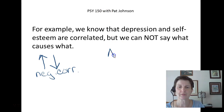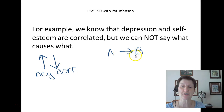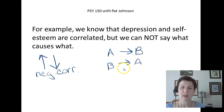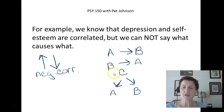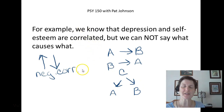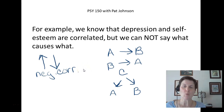In a correlation, the first variable may be causing the second — it may be true that depression causes low self-esteem, or it could be that low self-esteem causes depression. But often in a correlation, some third variable is causing both variables to change. For example, a tragedy in someone's life could cause both depression and low self-esteem. So in a correlation, we don't know what's causing what — all we can say is there's a correlation, a relationship, but not causation. To say one variable caused another, we have to move on to our next type of research: experiments.